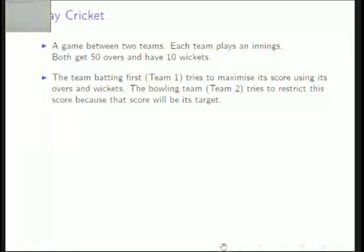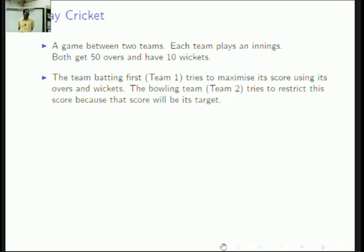The goal is the following: the team batting first — let's call that team one — tries to maximize its score using its overs and wickets, because the bowling team is essentially going to chase this target. So team one has to try to set a target as high as possible, and the bowling team's goal is to keep it as small as possible.